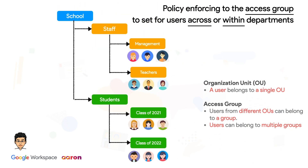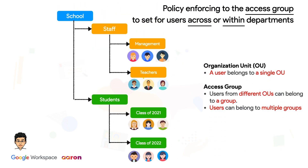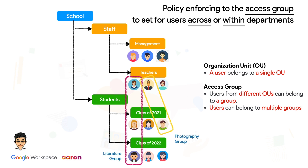As shown here, a user can only belong to a single OU at a time. However, users from different OUs can belong to a group, or users can belong to multiple user groups. In this case, a teacher belongs to a teacher's OU, while that teacher can also be in the chess group, charity group, and photography group. That's a good example of how users can associate across or within OUs by taking advantage of Access Group.